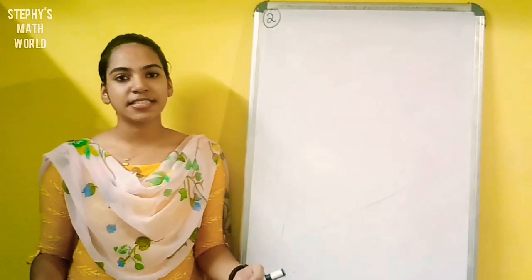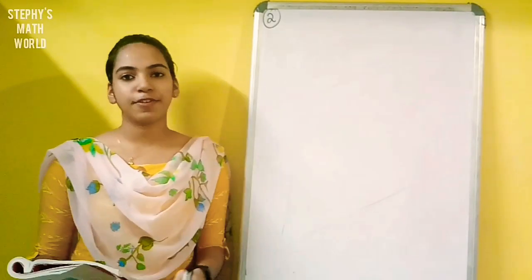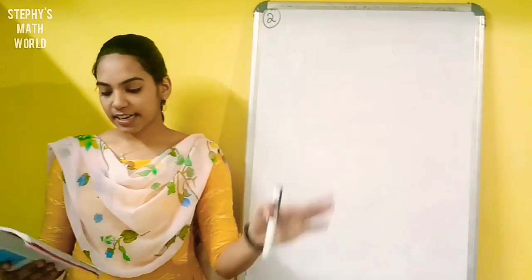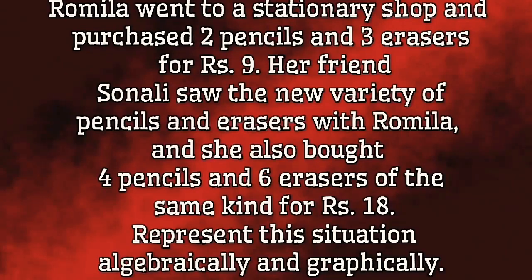Next, we have a word problem. Let's take a look at the question graphically. Romla went to a stationery shop and purchased two pencils and three erasers for Rs.9. Her friend Sonali saw the new variety of pencils and erasers with Romla and she also bought four pencils and six erasers of the same kind for Rs.18. Represent the situation algebraically and graphically.